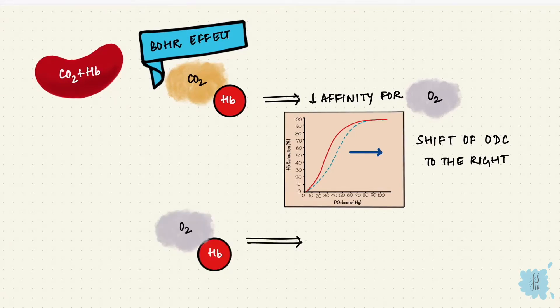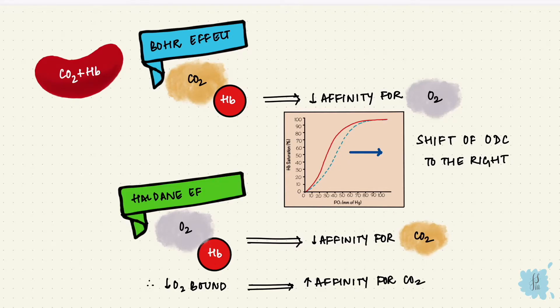The binding of oxygen to hemoglobin lowers the affinity for carbon dioxide. So if less oxygen is bound, that means there's a higher affinity for carbon dioxide. And this is the Haldane effect.